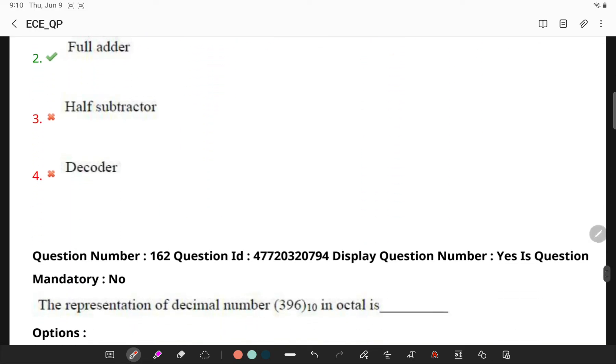So, the representation of 396 base 10 in octal is, so if I take 396, if I divide it by 8, that is 49 and I will be having a remainder 4 which is the least significant bit and again 49 divided by 8, the remainder is 1 and 6 divided by 8 is 0.